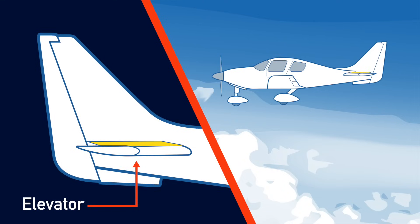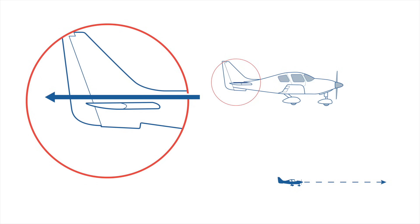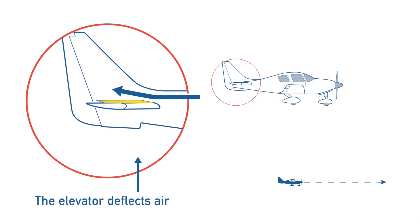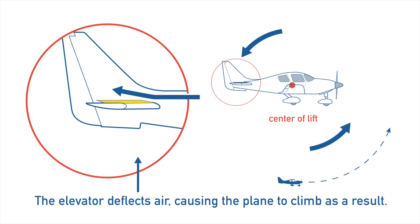Elevators control the pitch of the plane. They determine whether a plane goes up or down, and are located on the tail. They operate using the same principles as the rudder. In this example, the elevator is set to stick out above the tail. This deflects air upward and forces the tail downward. Because the plane rotates around its center of lift, the nose is forced upward and the plane climbs.